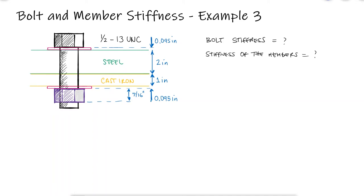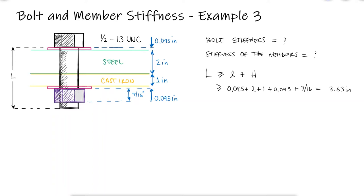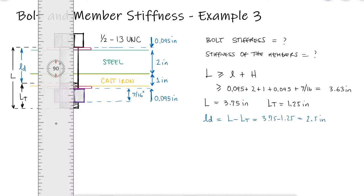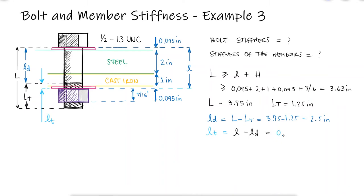Following the same procedure from example 1, we know that the length of the bolt has to be at least the grip plus the height of the nut. We find a bolt that has a length of 3.75 inches of which 1.25 inches are threaded. The unthreaded length is therefore 2.5 inches and the threaded length within the grip would be 0.69 inches.